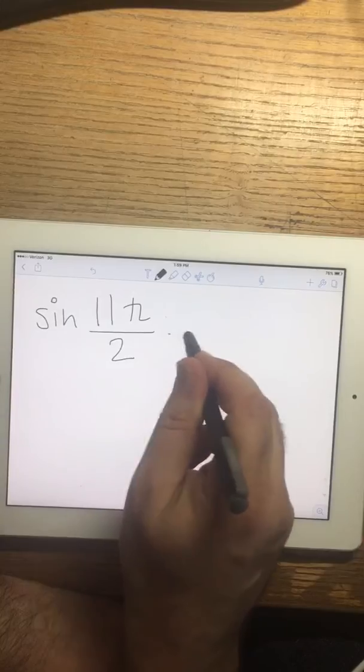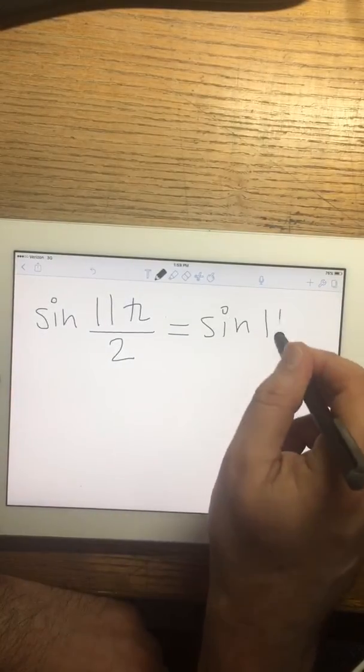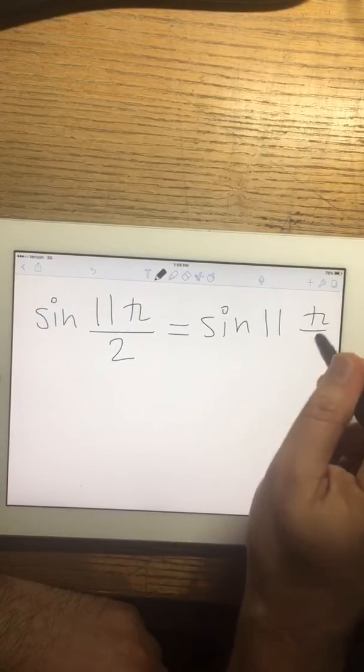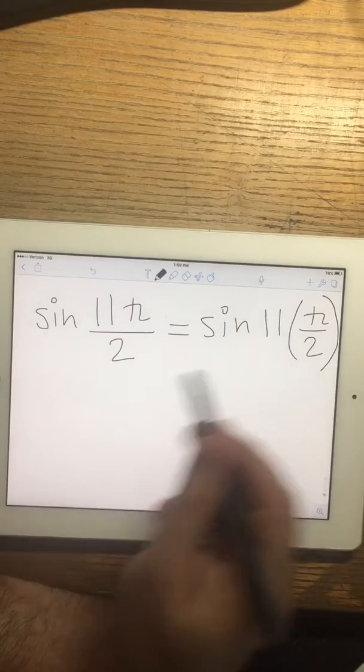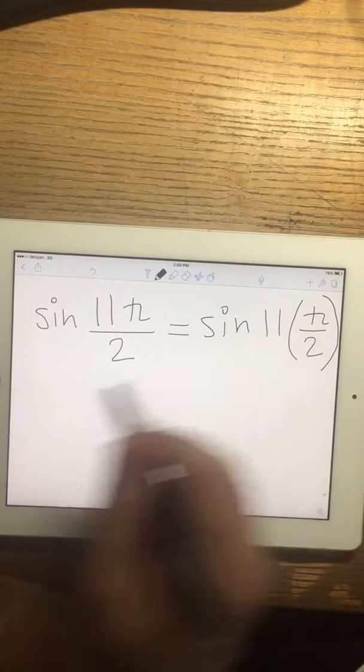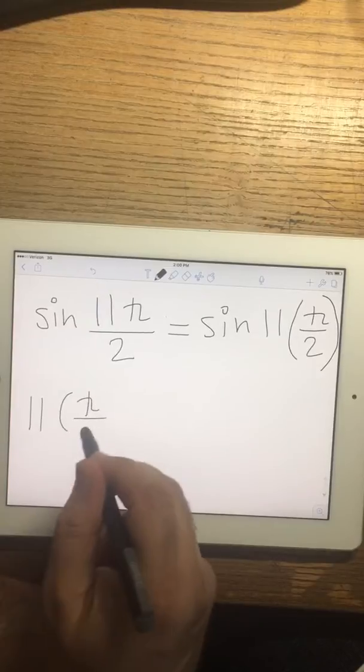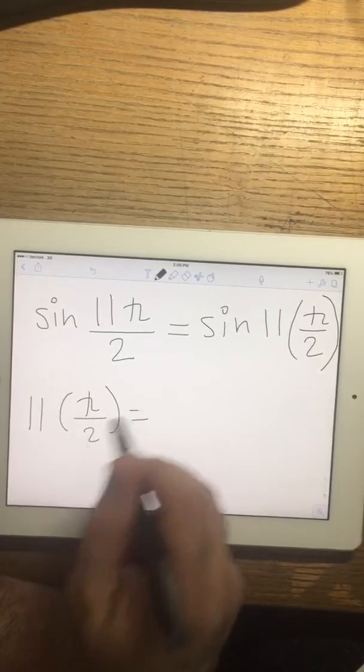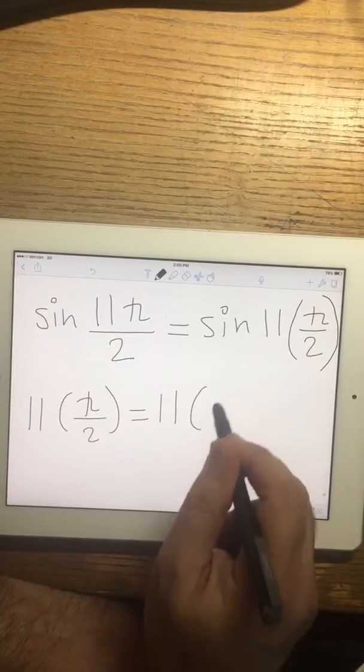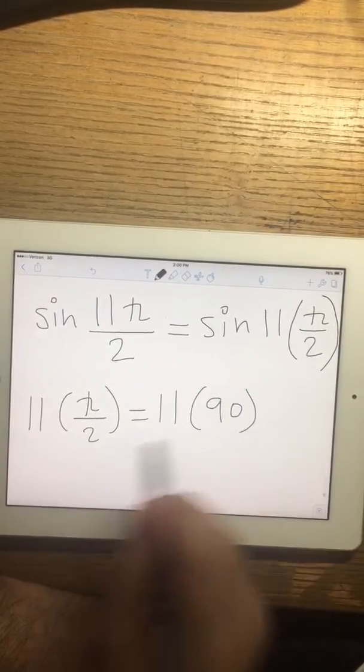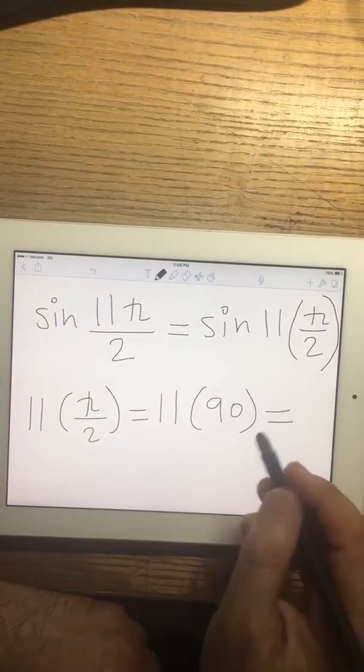So I can write it as sine 11 times pi over 2. Now let's see that number, what is that number? 11 times pi over 2 is the same as 11 times 90 degrees. So it's 990.